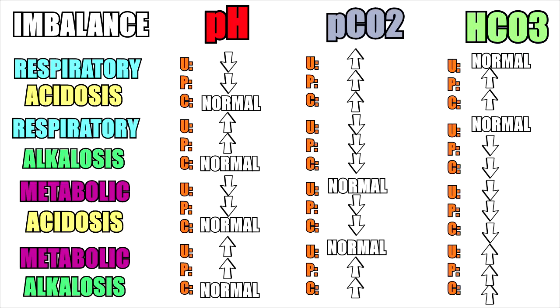Here's the summary table — this is your cheat sheet. The only thing you might have trouble with is UPC: U stands for uncompensated, P stands for partially compensated, and C stands for compensated. I hope this video helps you guys ace your exams and become little ABG masters, able to go to the hospital and identify exactly what's going on with your patient.